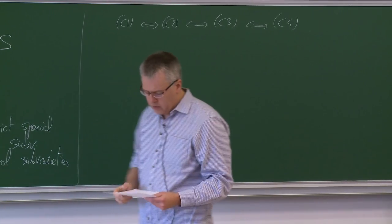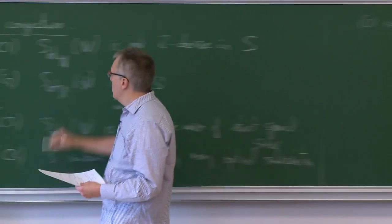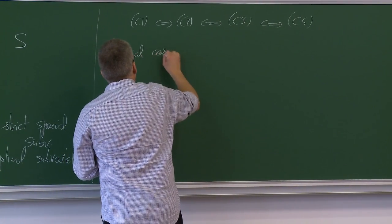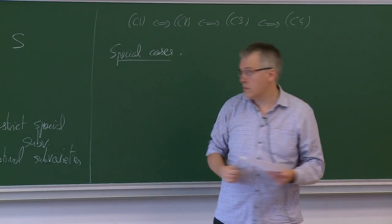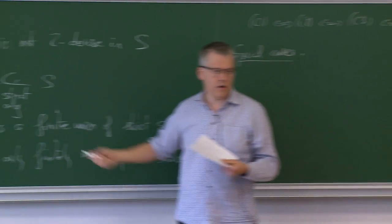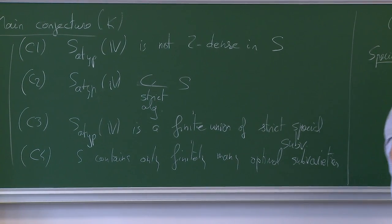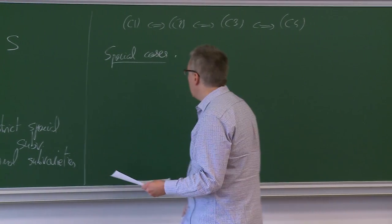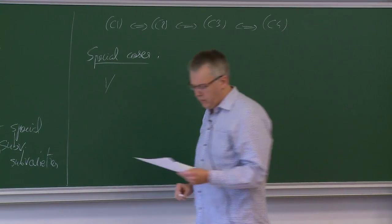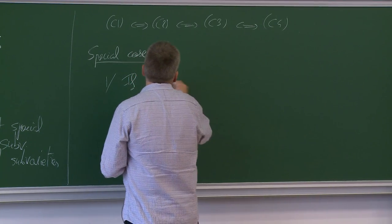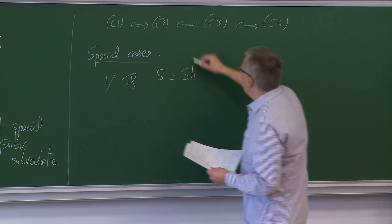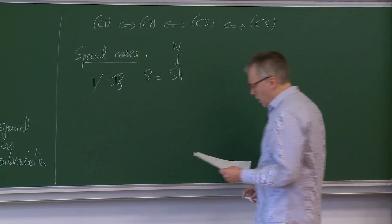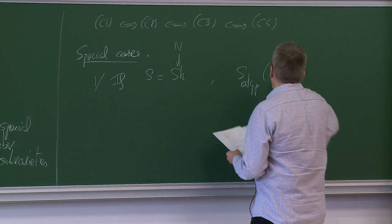Let me explain on special cases what those conjectures tell you. The special sub-varieties for S and V are irreducible components of your Hodge locus, and these will be the maximal ones. Maybe you are a bit surprised if you think of the case of a Shimura variety. If S is a connected Shimura variety and you take for V the standard variation of Hodge structure on a Shimura variety given by a representation of your Shimura datum, then it's easy to check that this atypical locus is empty.